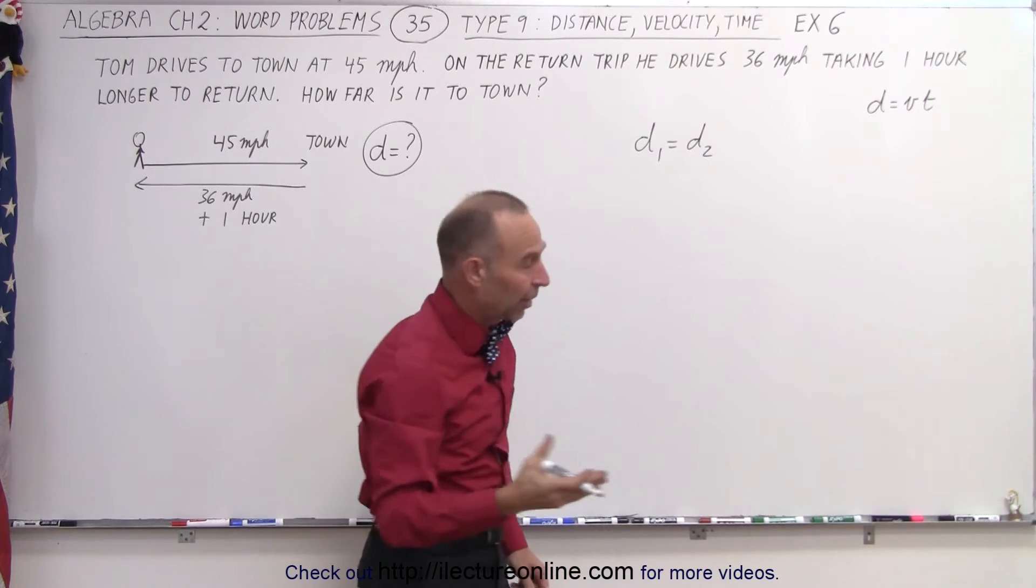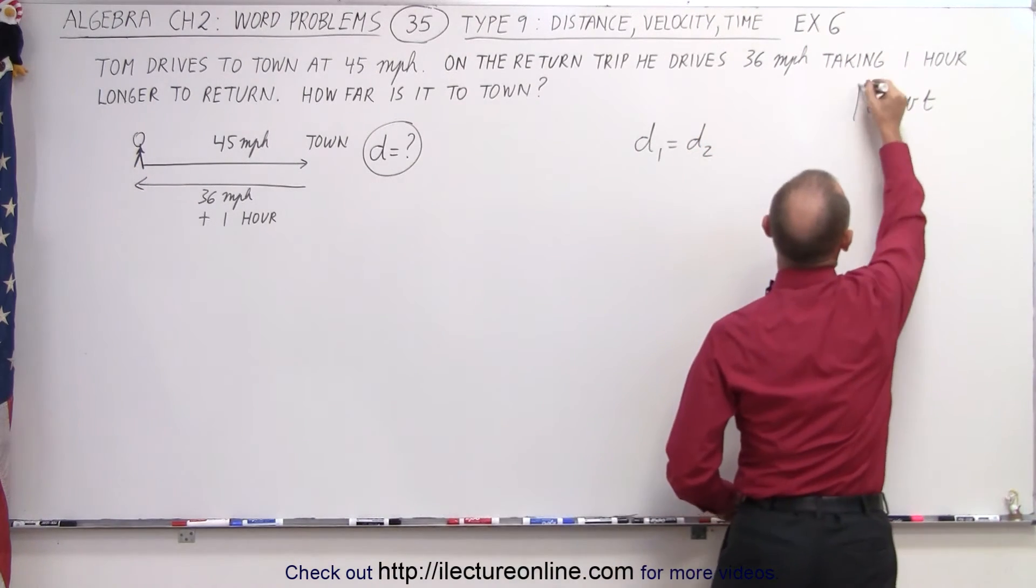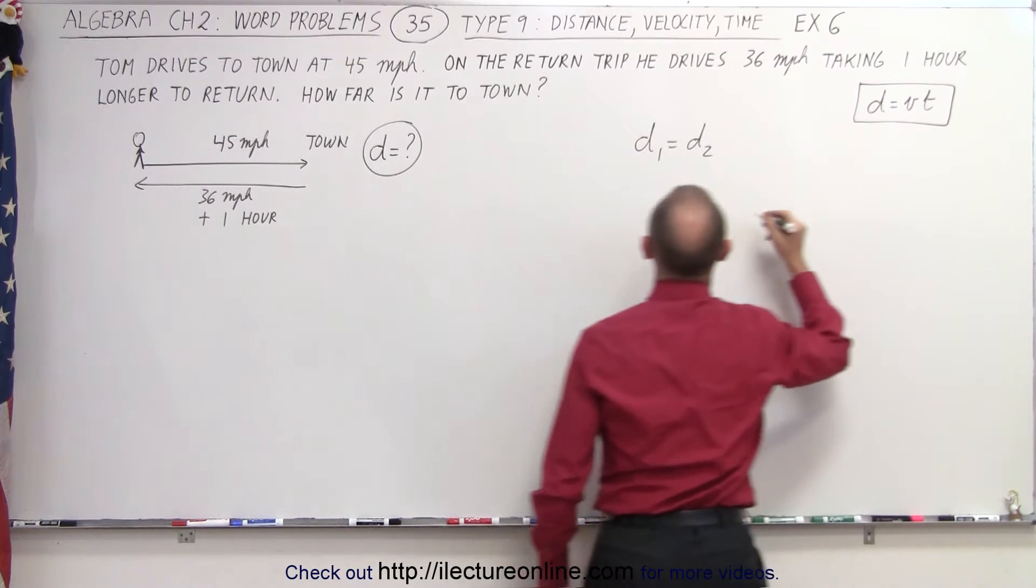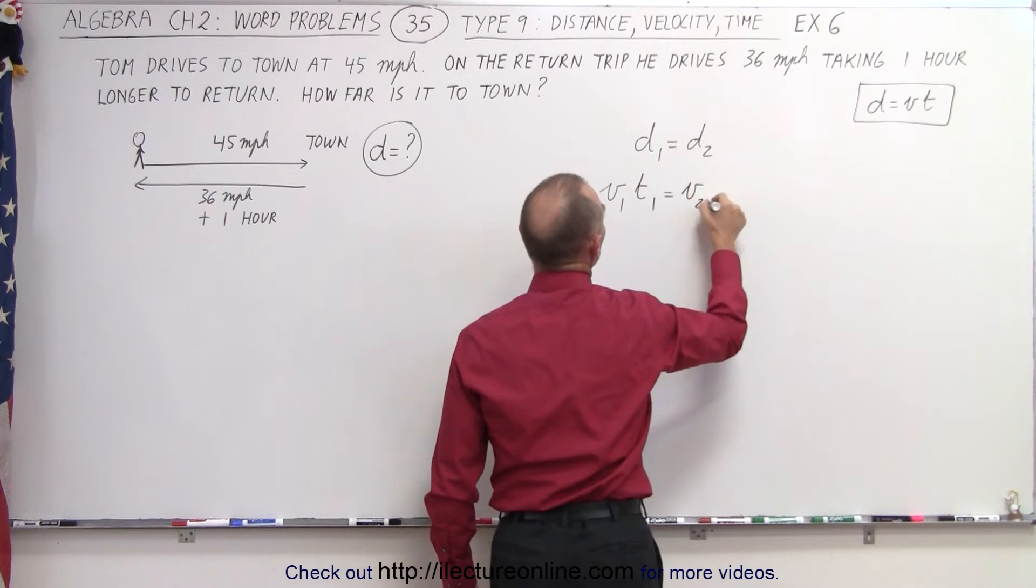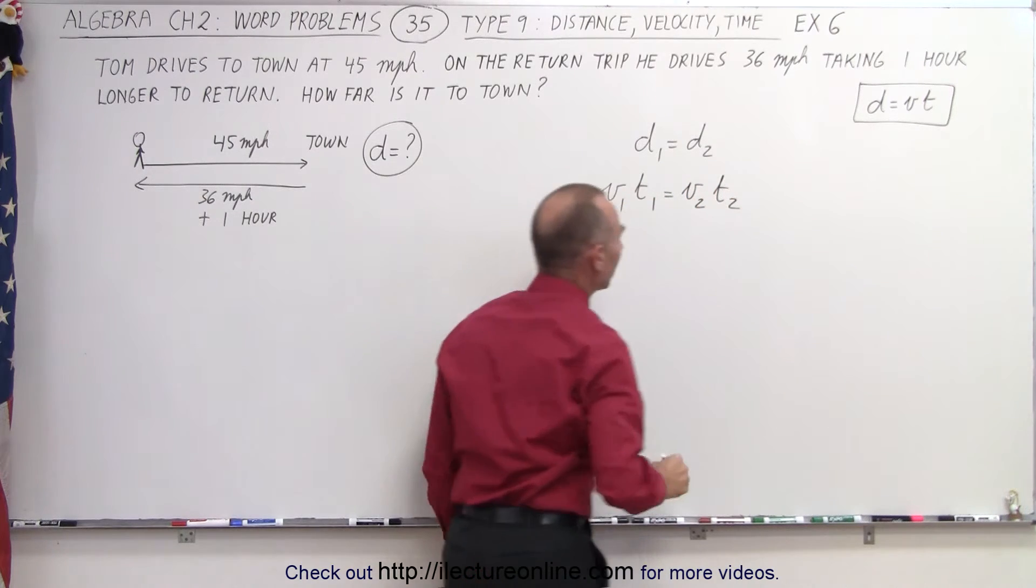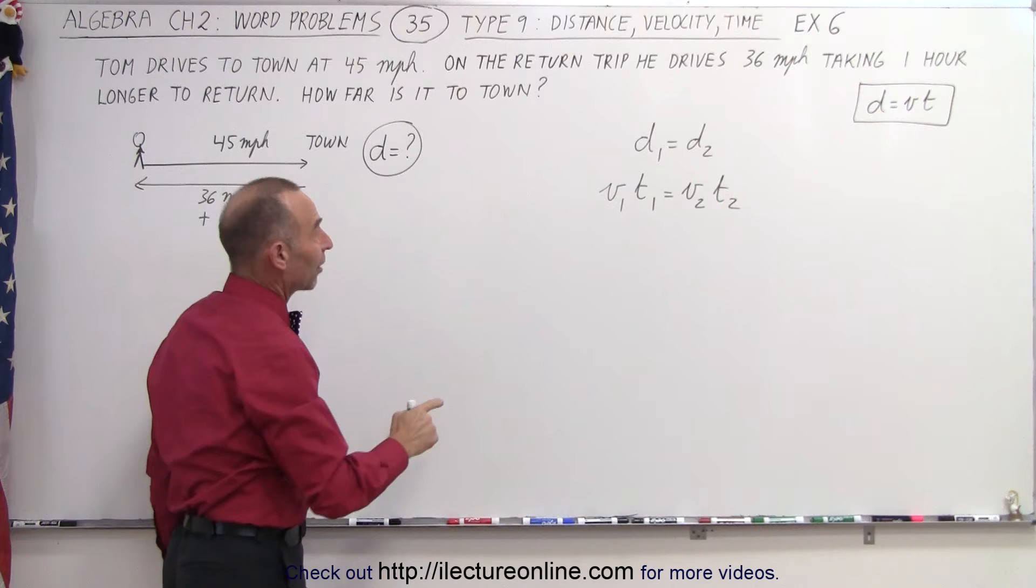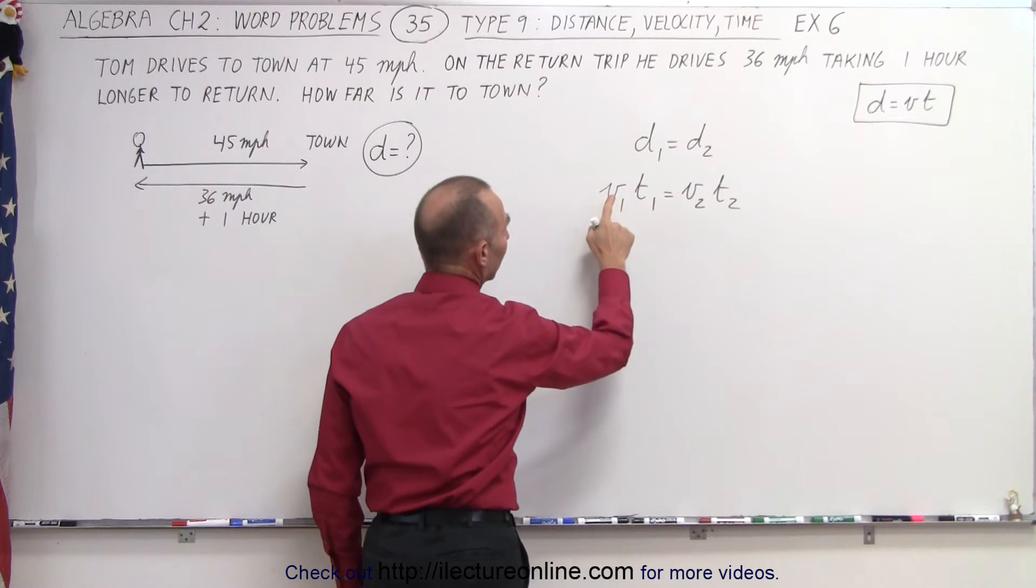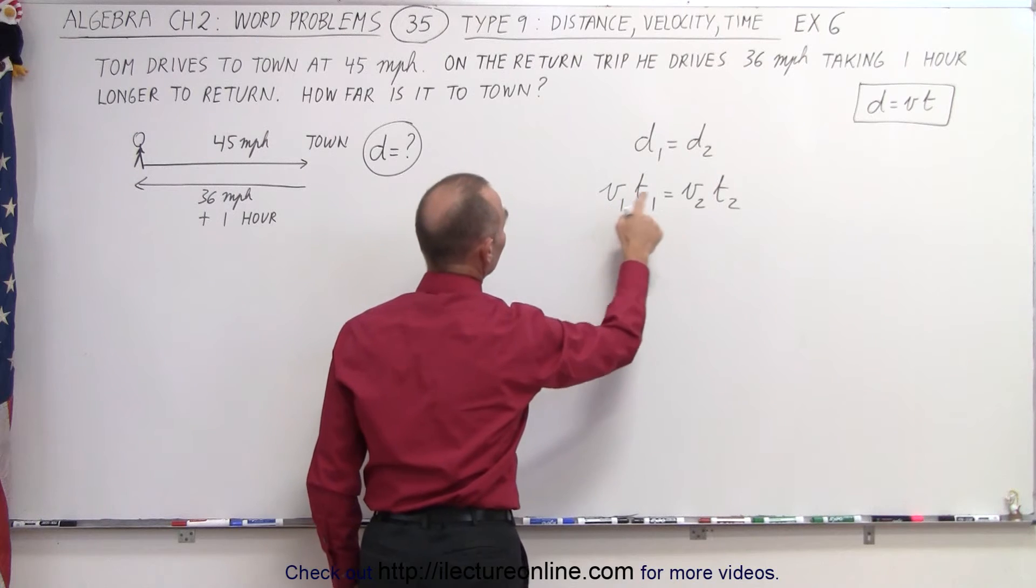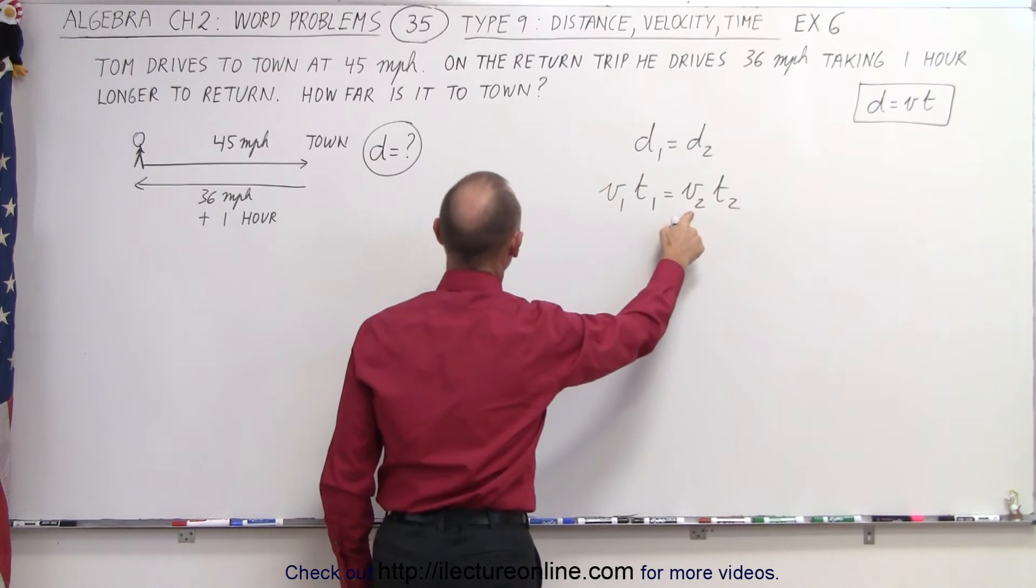And then realizing that our general equation, distance equals velocity times time, we can write that v₁ × t₁ = v₂ × t₂. Now we do know the velocities going to town. Let's say one is going to town, two is coming back. So v₁ would be 45 miles per hour, and v₂ would be 36 miles per hour.